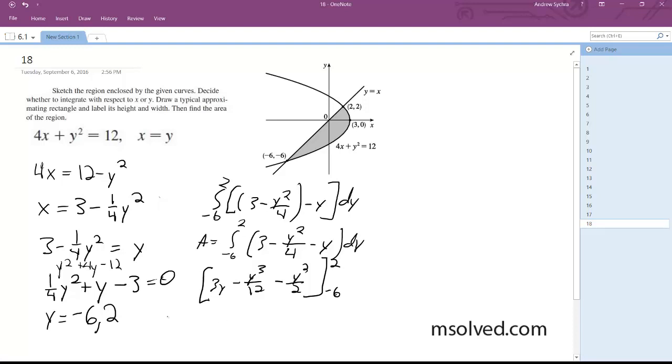And plugging these equations in starting with 2 and then with 6, we get 3 times 2. Actually, you know what, I'm just going to skip ahead where I do 3 times 2 so I get 6, minus 8 over 12, minus 4 over 2, minus negative 18 plus 216 over 12, minus 36 over 12, minus 36 over 2.